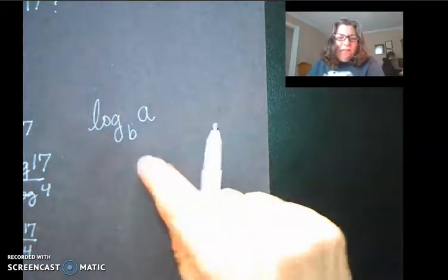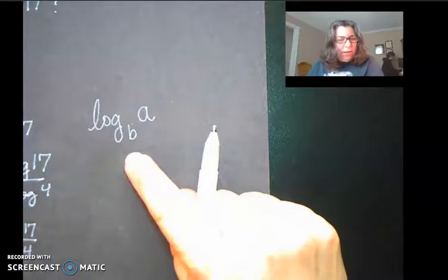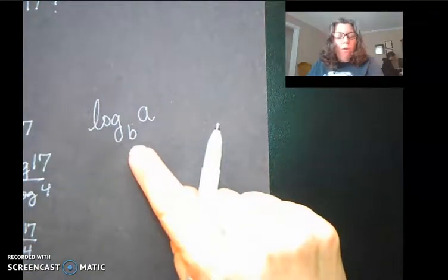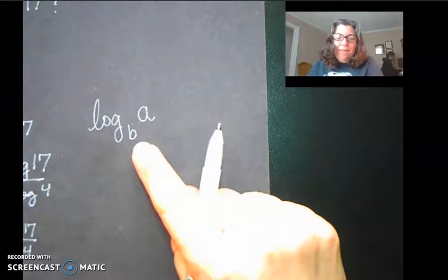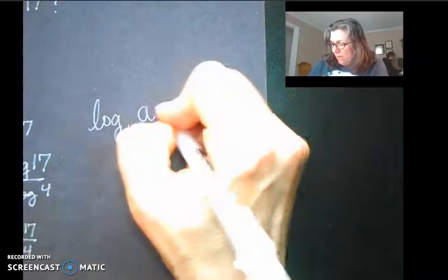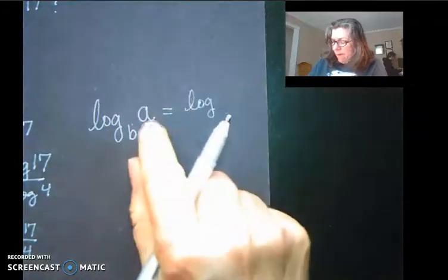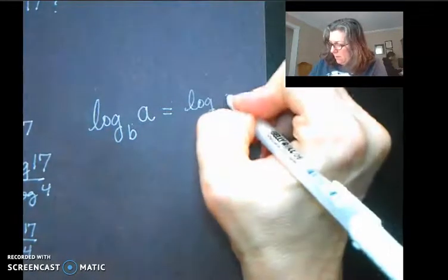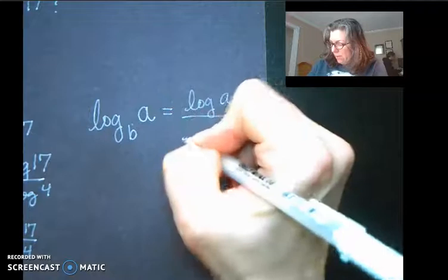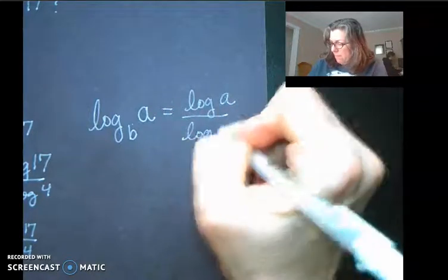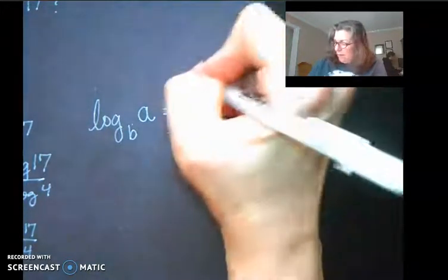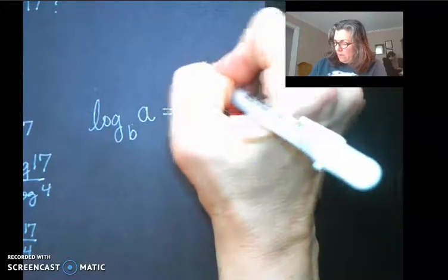This is impossible to put in our calculator unless it's a 10 or an e. Okay, so we can find this as the logarithm of a divided by the logarithm of b, and that's using the log key on your calculator.